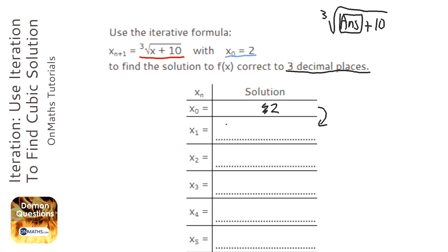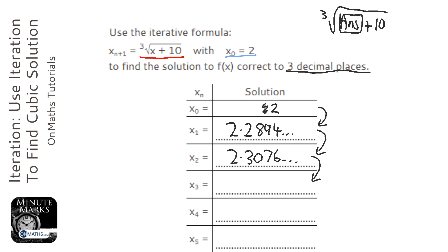when I press equals, I get the answer 2.2894... But all I need to do now is press equals again, and it gets me the next answer. So it saves you having to type in the whole thing again and again, which in an exam you don't want to be doing.